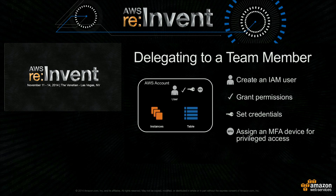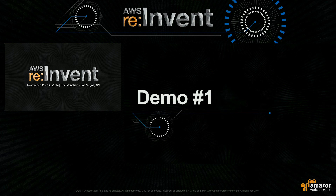For the virtual MFA, you can use your smartphone and any TOTP — time-based one-time password — client. That becomes your possession factor. So it is a two-factor authentication: username and password is your knowledge factor, and this becomes your possession factor. So let's look at a demo in action.